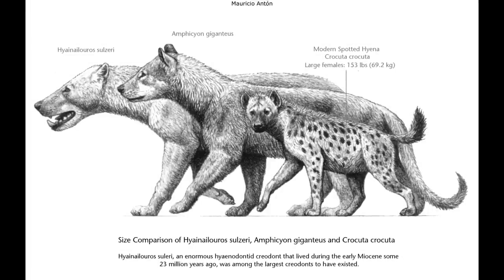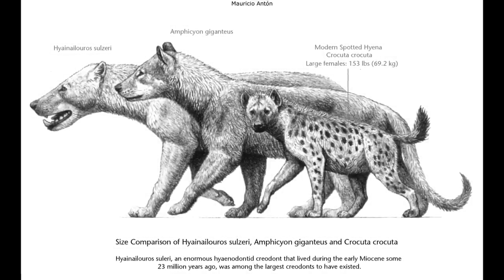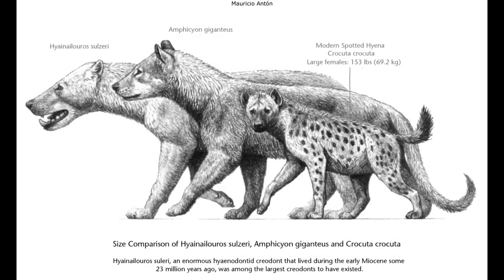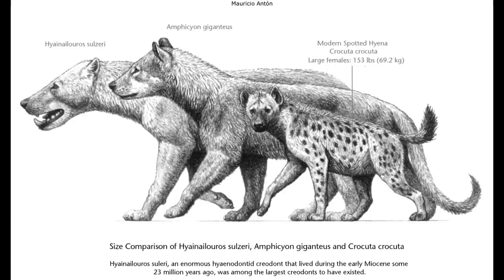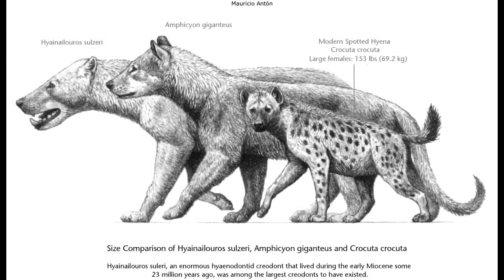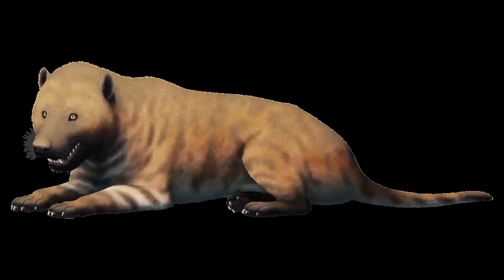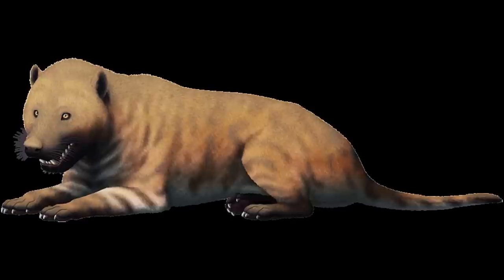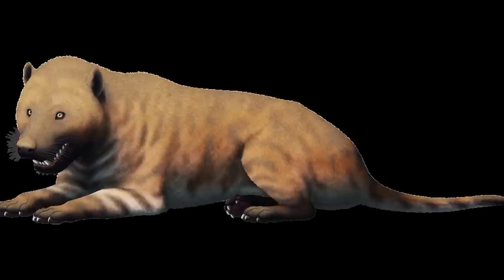Its close relative Hyainailouros was probably slightly smaller, and successfully spread into Europe and Asia during the early Miocene. This trend for increasing body size in African Miocene Hyaenilurids may have been due to the arrival of the first Carnivorans on the continent around the time of the Oligocene-Miocene boundary. As new competition arrived, Hyenodonts shifted into increasingly specialised niches, becoming huge apex predators that towered over incoming felids and even the Amphicyonids.